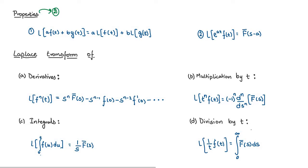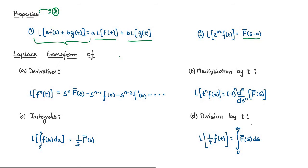Now there are two properties in Laplace transforms. The first one is the linearity property, which states that the Laplace transform of a·f(t) plus b·g(t) is equal to a multiplied by the Laplace transform of f(t) plus b multiplied by the Laplace transform of g(t). The second property is the shifting property, which states that the Laplace transform of e to the power of at multiplied by f(t) is equal to F bar of s minus a.